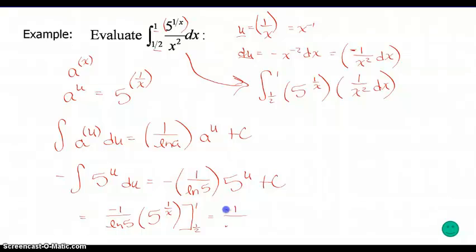I have -1/ln(5) times 5^(1/1), that's plugging in 1, my upper limit for x. Then minus -1/ln(5) times 5^(1/(1/2)), which is actually squared. 1 over 1/2 is 5². So there, I'm done. I can clean that up some more, but I don't have to. If it was a free response question, I would get all points for that as it's written.